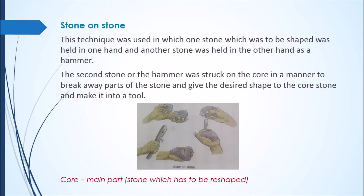In the stone-on-stone technique, the stone which has to be reshaped is held in one hand, and another stone is held in the other hand and used as a hammer. The hammer stone was struck on the core stone in a manner to break away parts of the stone and give the desired shape to the core stone, making it into a tool. The core stone is the stone which has to be reshaped.